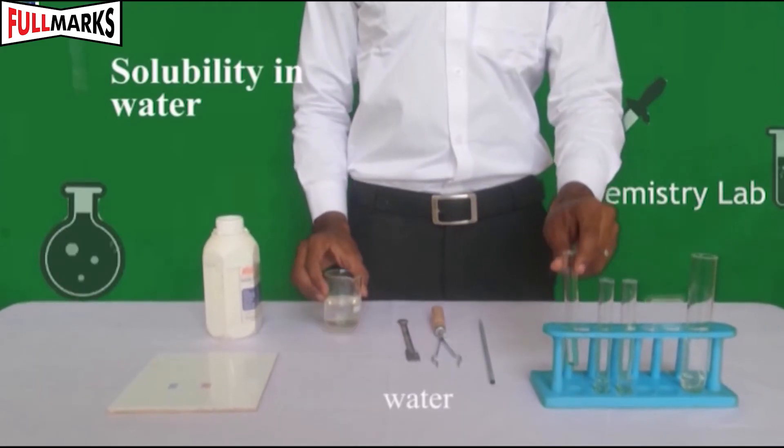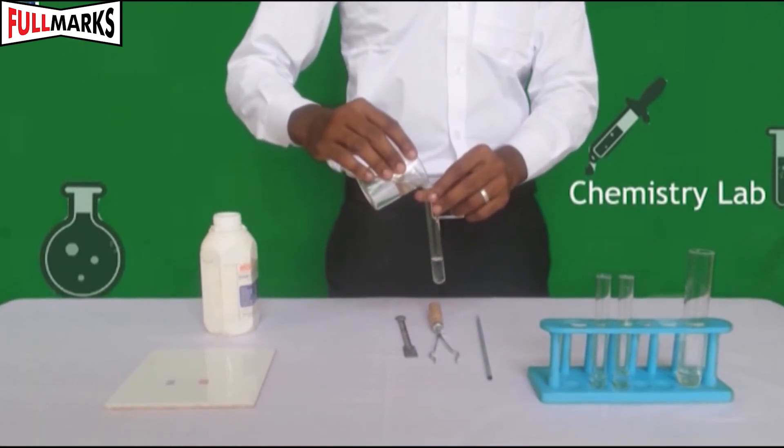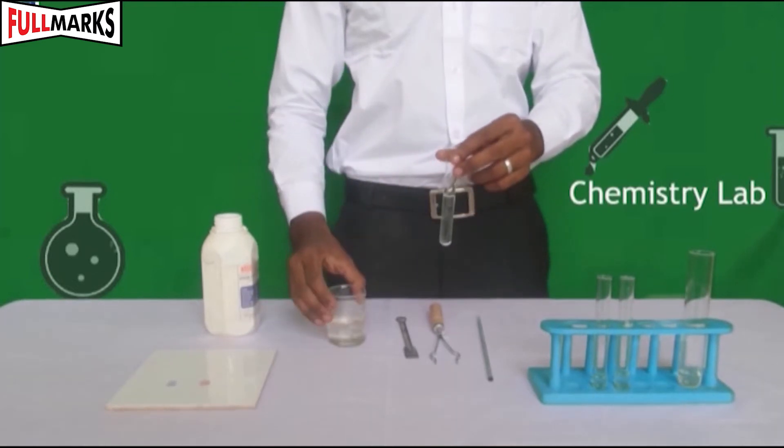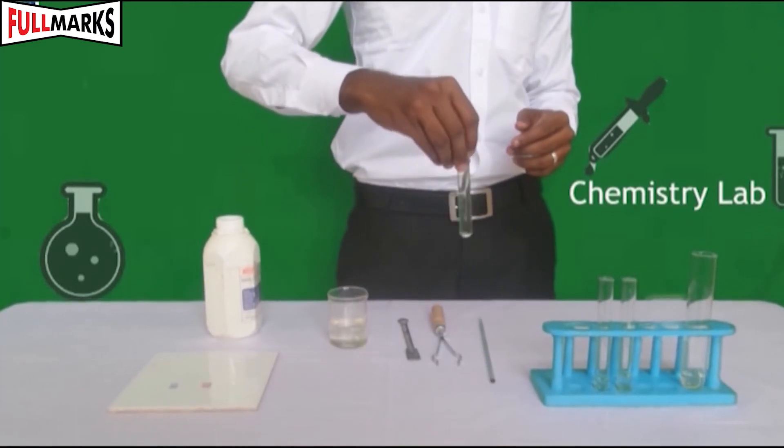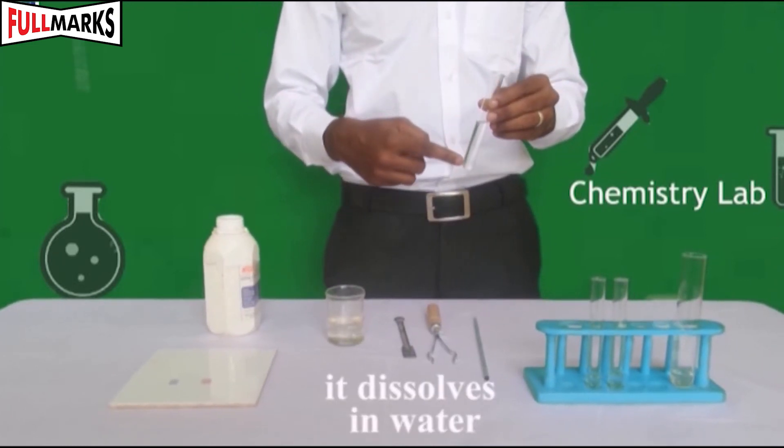Test 2: Solubility in water. Take 2 ml of acetic acid in a test tube, add 10-15 ml of water and shake. It dissolves in water to form homogeneous solution.